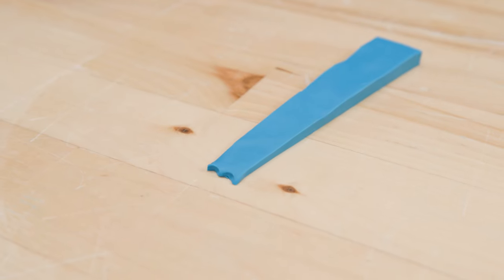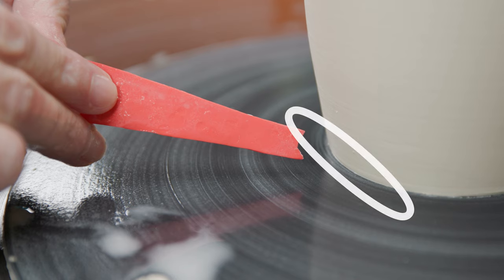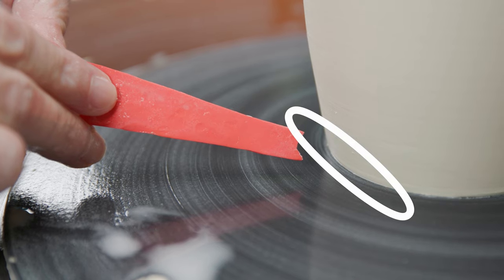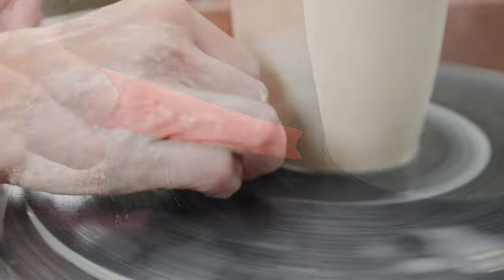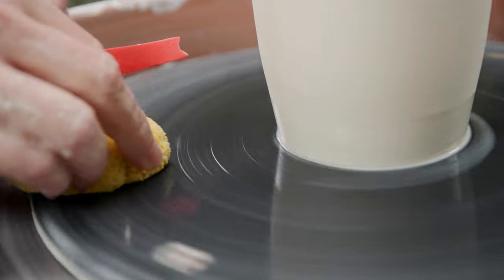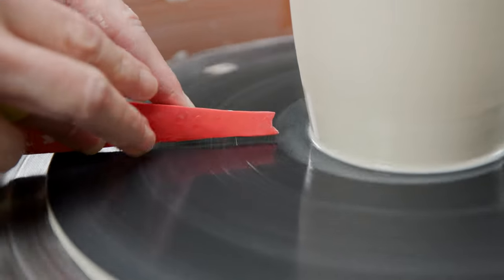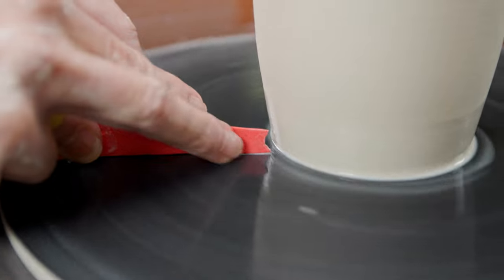Here's a vase I threw where the foot is flat and the piece looks like it's growing right out of the bat. To give it definition, I'm going to use this profile tool that I made earlier. I just wet the piece and flooded the bat with water, then I pushed the tool right into the foot.